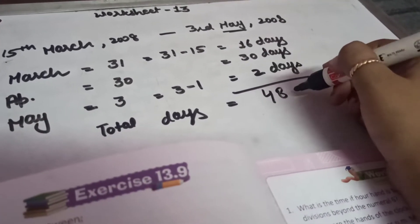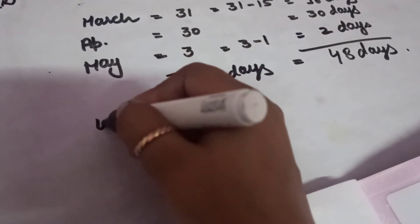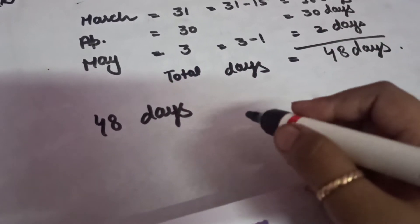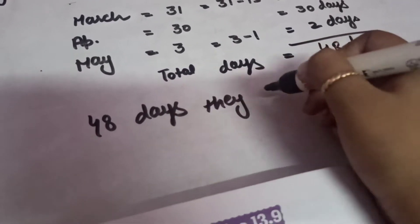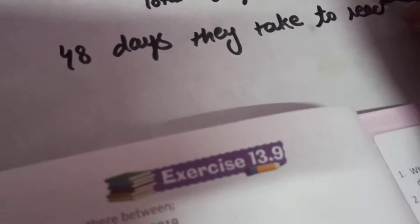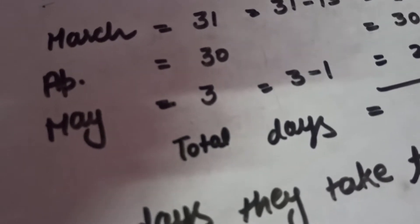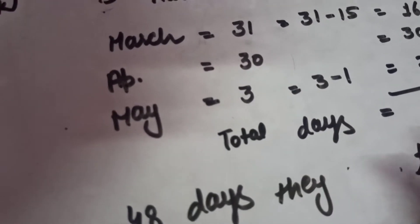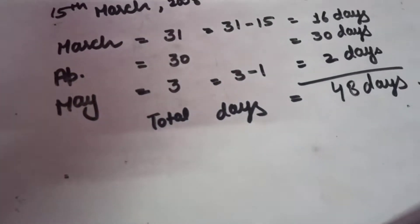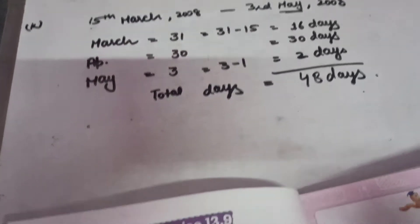Total days: 16 plus 30 plus 2 equals 48 days. So they took 48 days to reach the peak. This is the key part of Exercise 13.9.